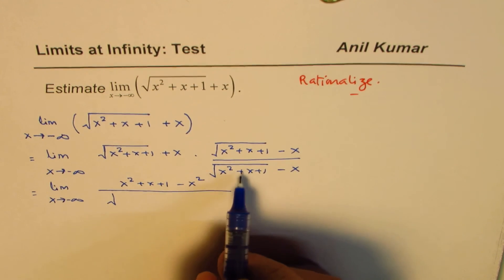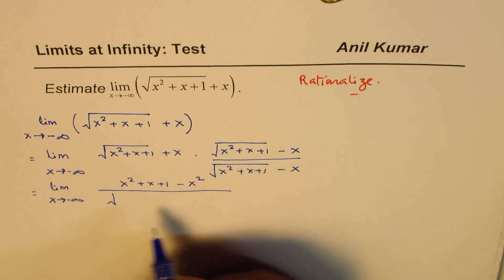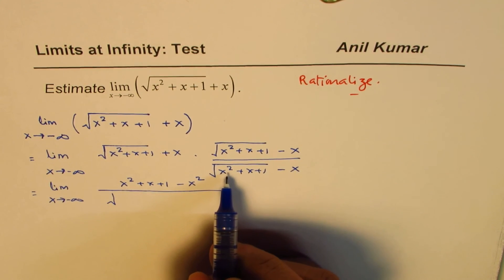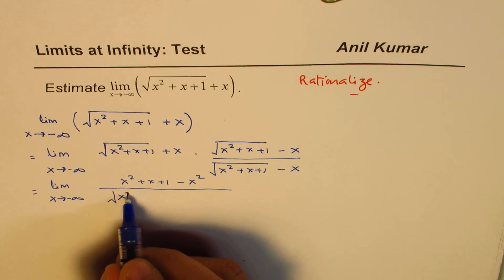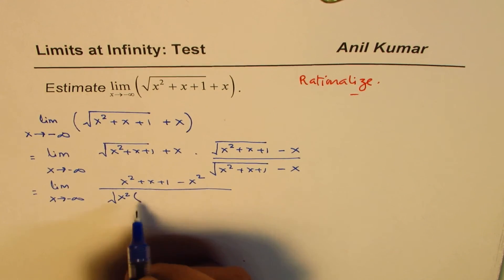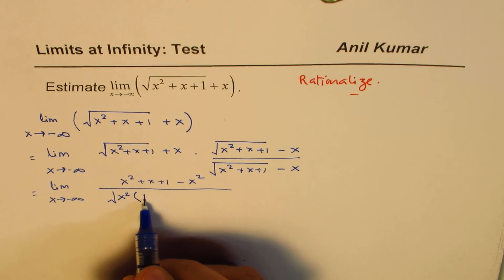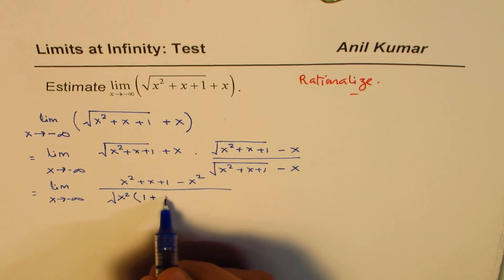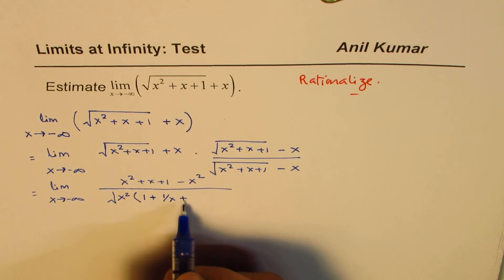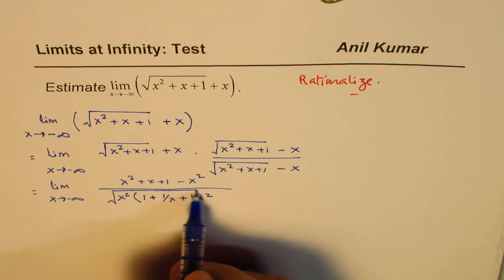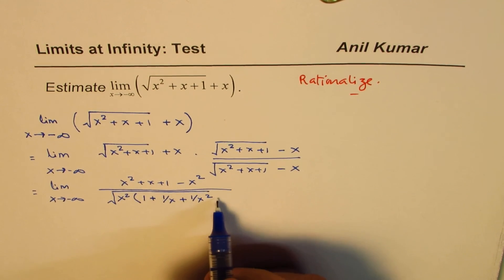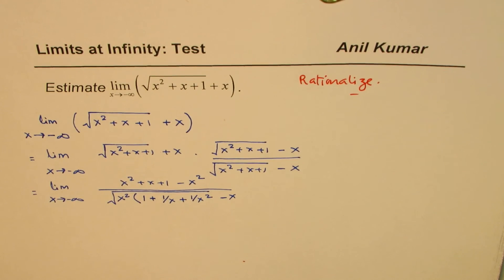I'm introducing one more step here by taking x squared common inside the square root. Within the square root I'm left with 1 plus 1 over x plus 1 over x squared. That is within the square root, and we have minus x outside.